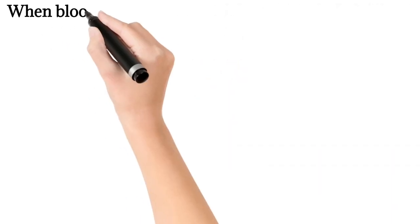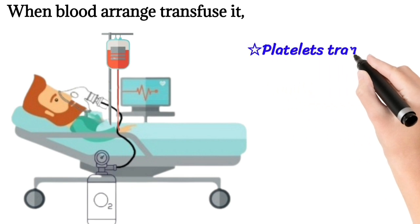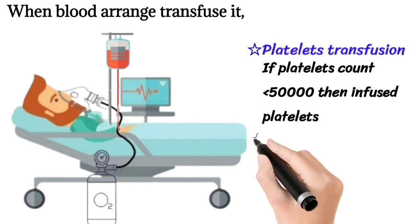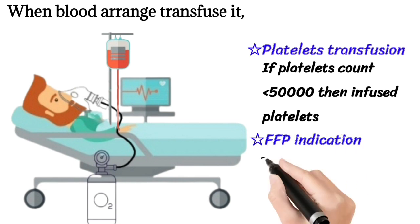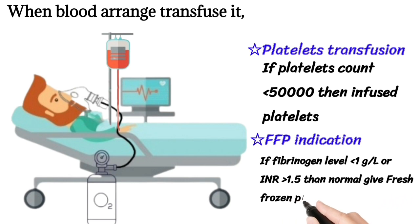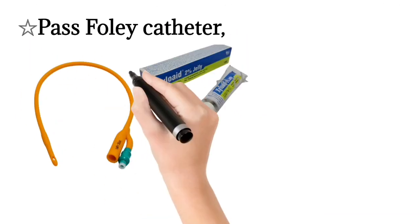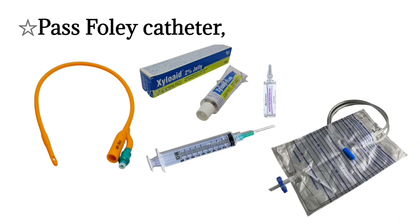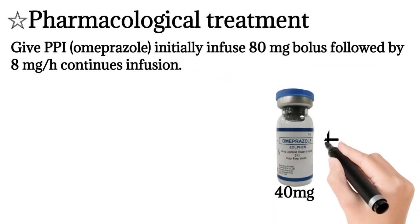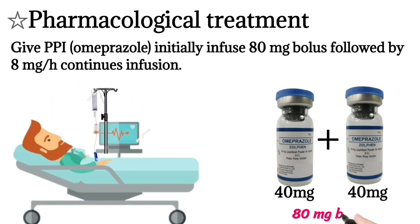Transfuse blood and platelets when the platelet count is less than 50,000. For FFP, the indication is a fibrinogen level less than 1 g/L or INR greater than 1 norm. Pass a Foley catheter. For pharmacological treatment, give PPI — omeprazole: initial infusion of 80 mg bolus followed by 8 mg per hour continuous infusion.